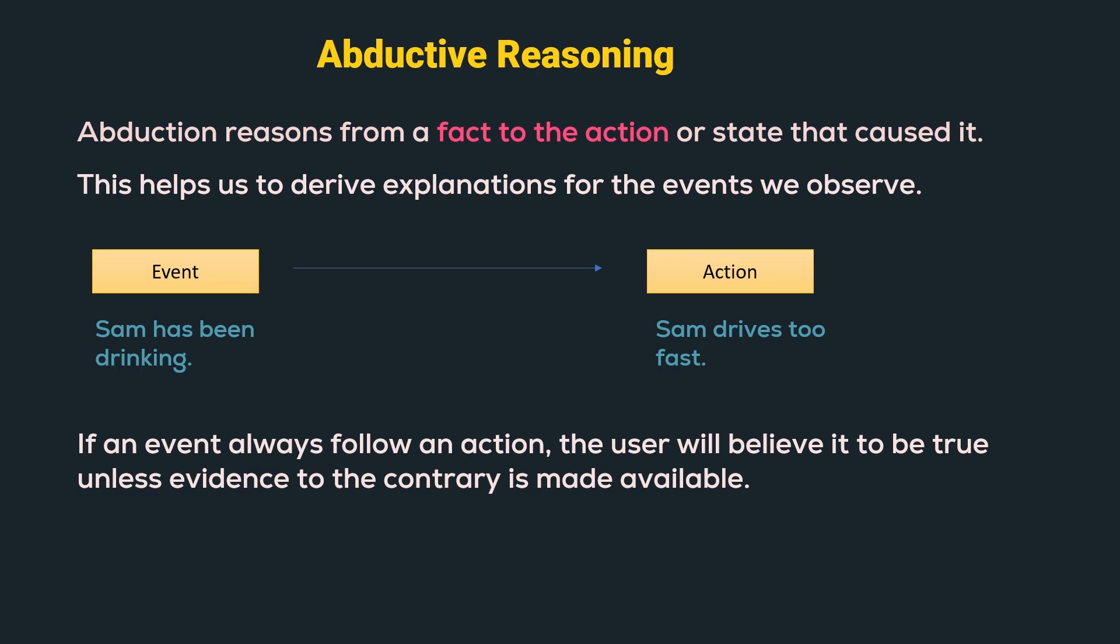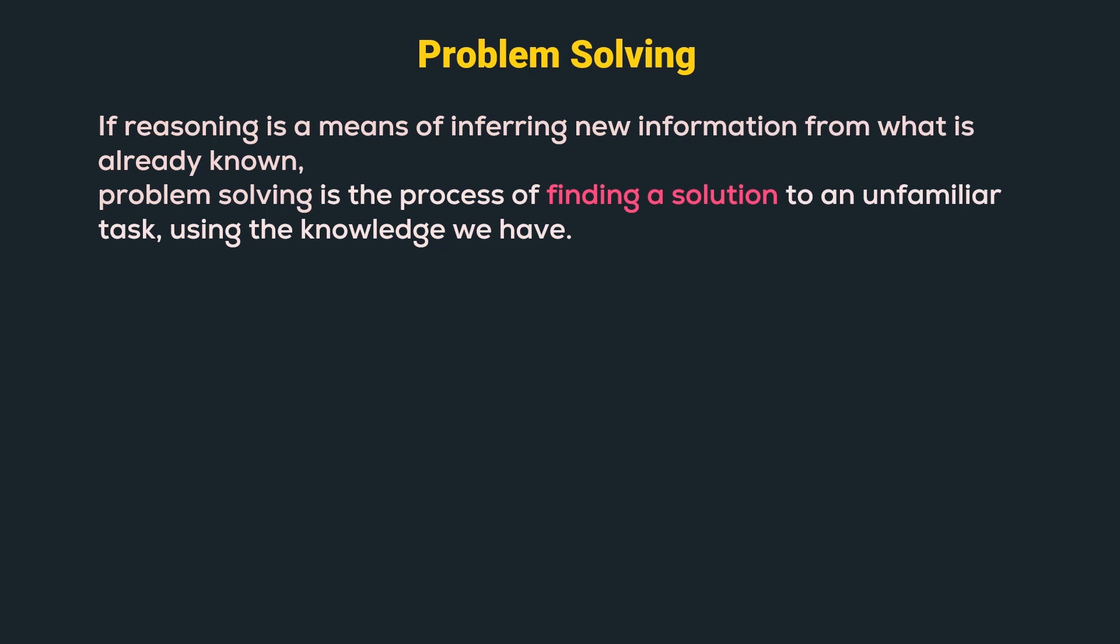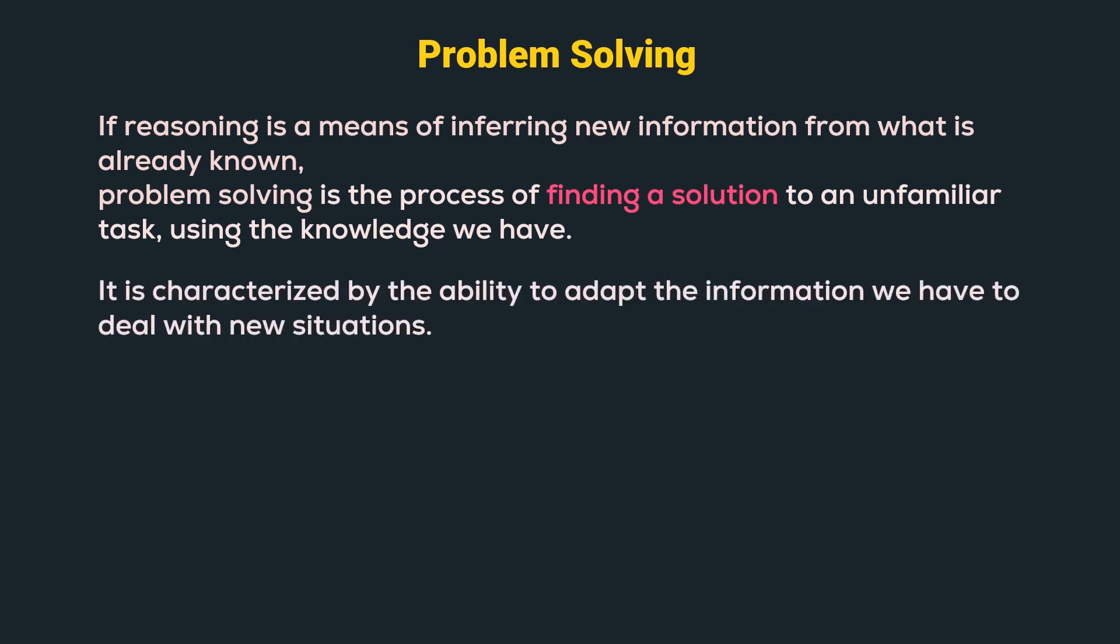So, we have completed three types of reasoning. Now, let us move on to problem solving. If reasoning is the means of inferring new information from what is already known, problem solving is the process of finding a solution to an unfamiliar task using the knowledge that we have. It is characterized by the ability to adapt the information we have to deal with new situations.